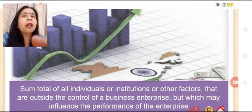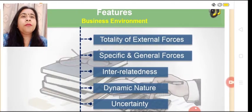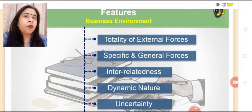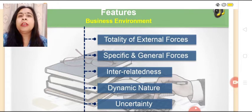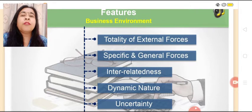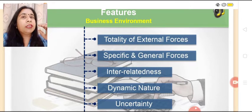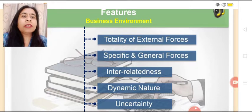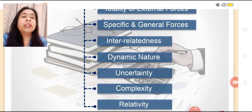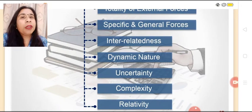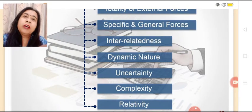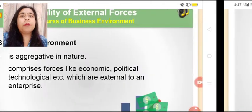One by one we will learn about the features of business environment. It is totality of external factors; it is related to specific and general forces; it has interrelatedness; it has a dynamic nature; uncertainty; complexity; and relativity. We will learn all these features one by one.